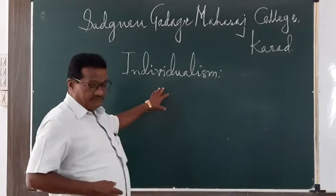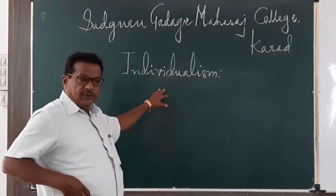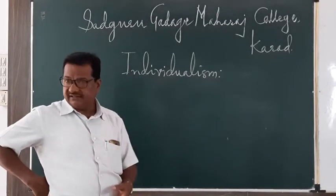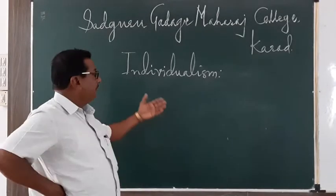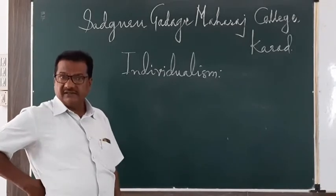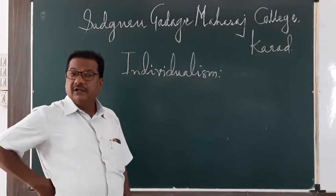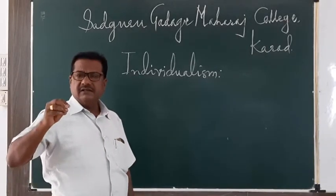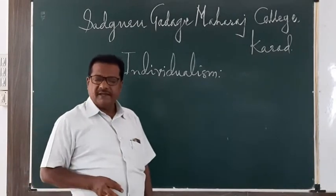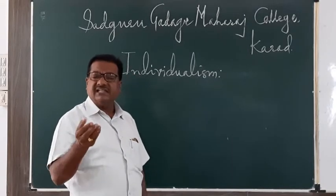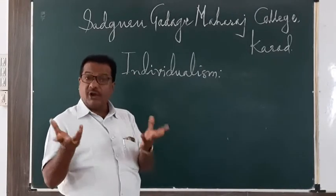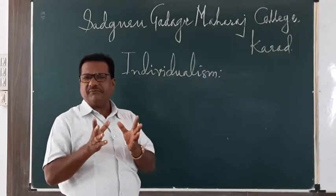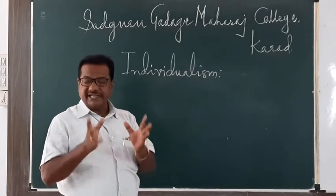We find that romantic poets have written songs, lyrics, sonnets, ballads, and odes. This clearly shows that romantic poets in the early part of the 19th century enjoyed too much freedom in case of form and themes.